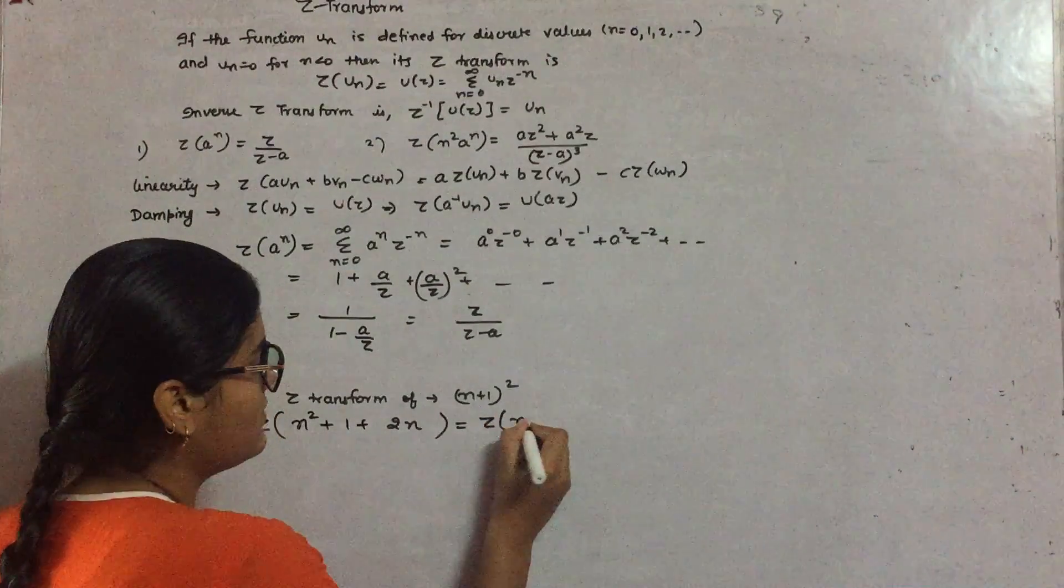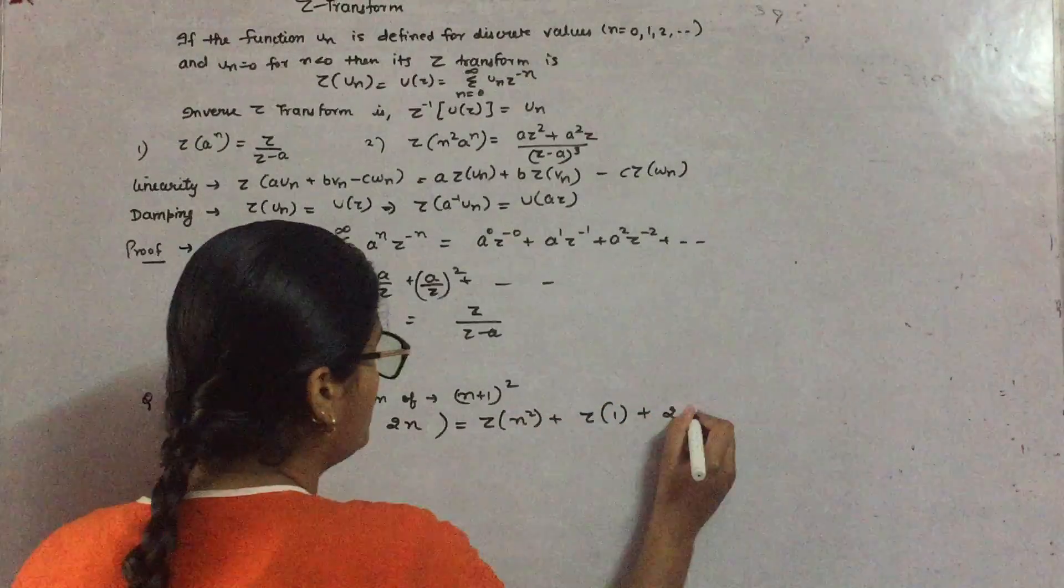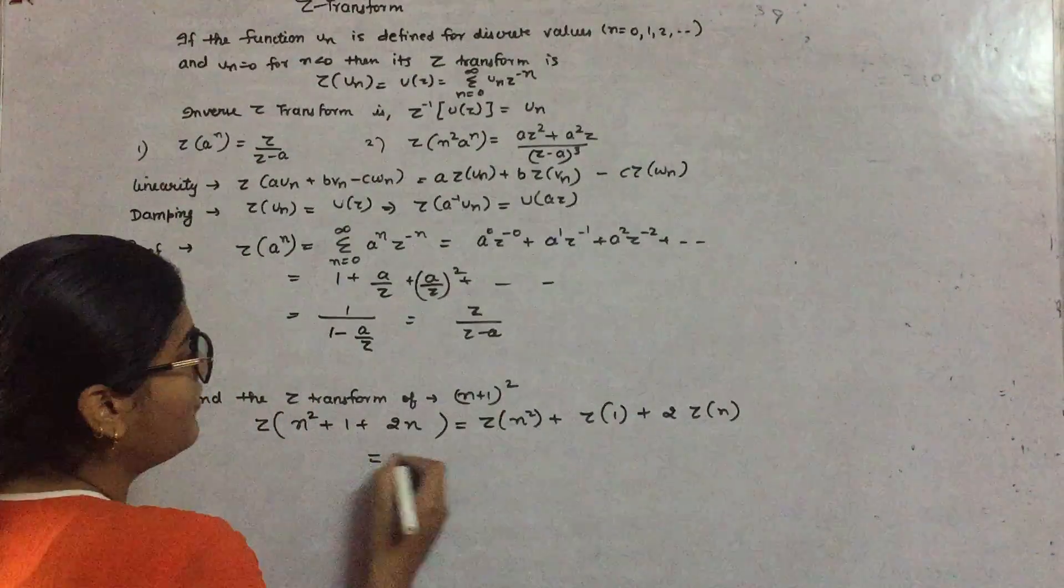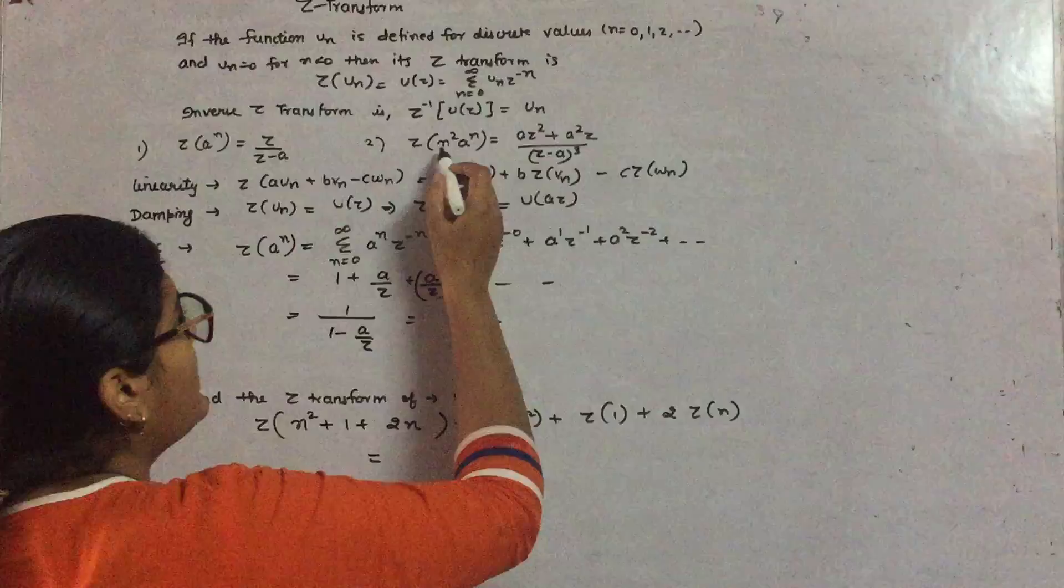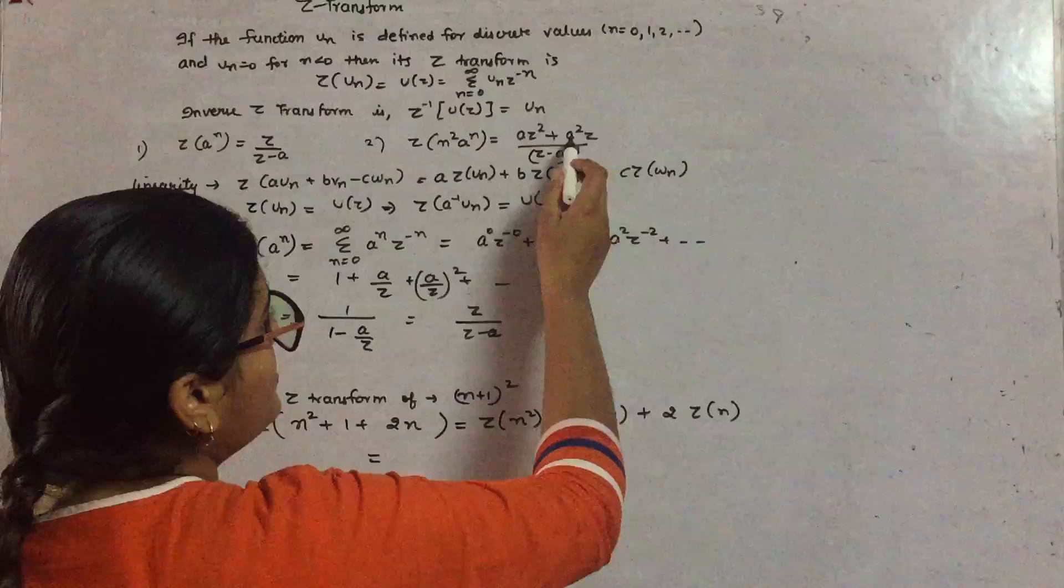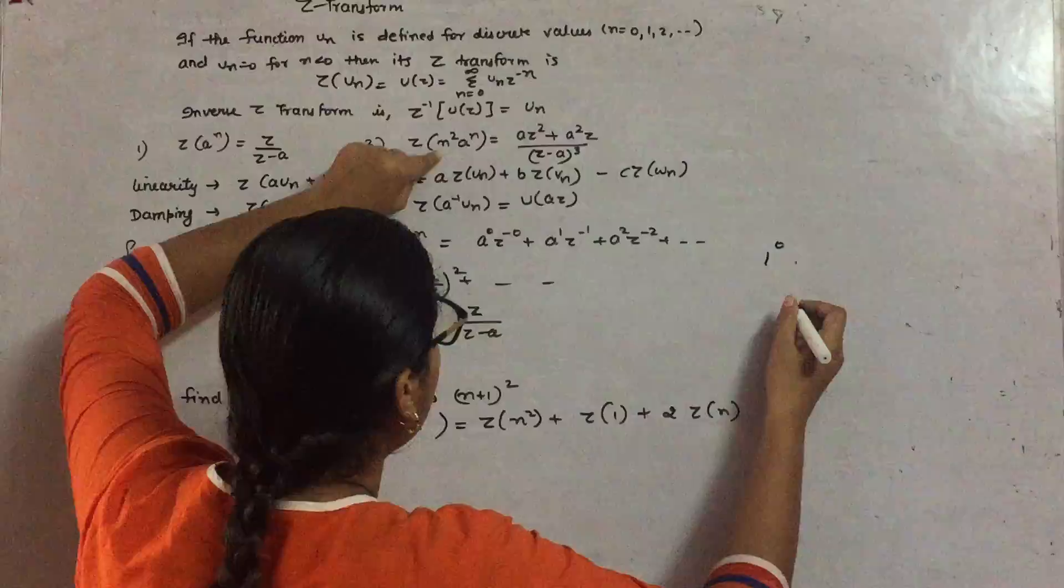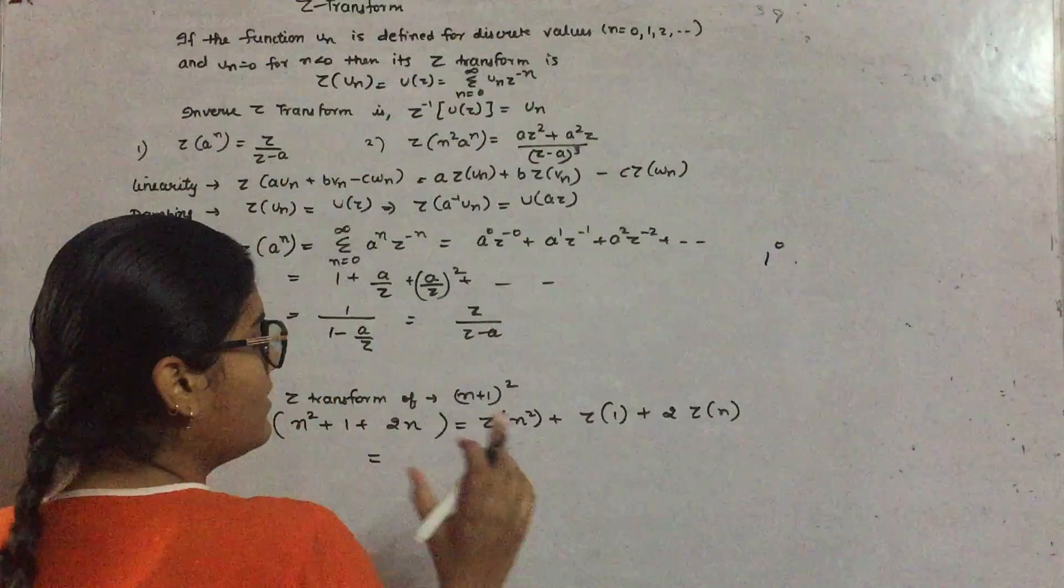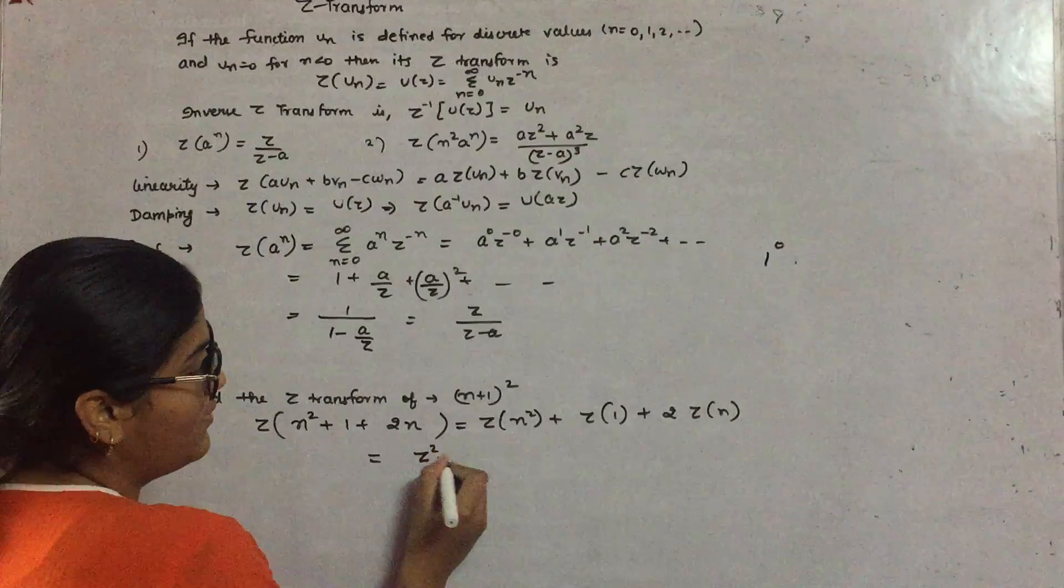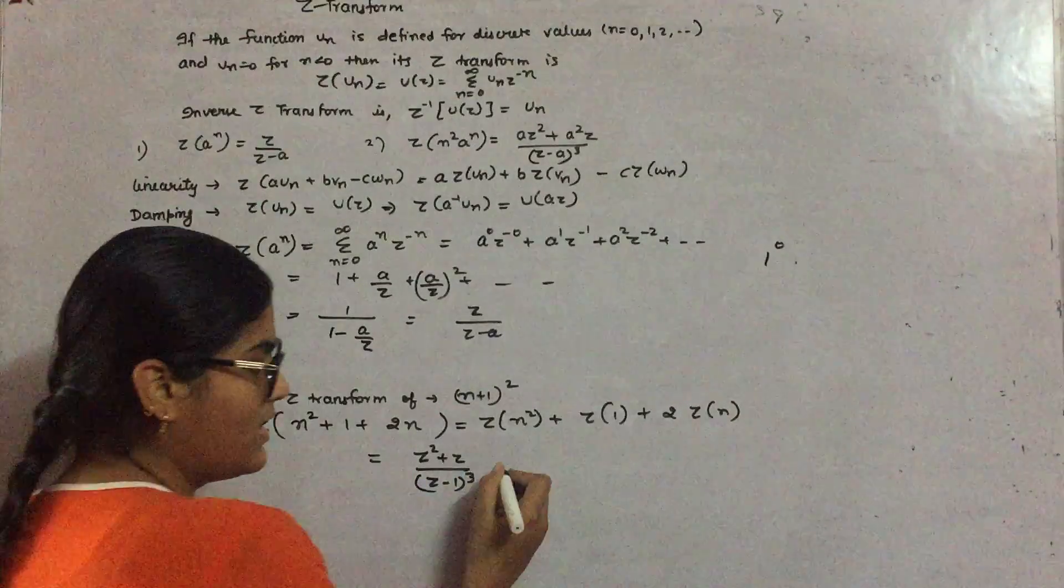This becomes Z transform of n^2 plus Z transform of 1 plus twice Z transform of n. Z transform of n^2 will become - you can see here - Z transform of n^2 becomes (Z^2 + Z)/(Z - 1)^3, where a is 1.